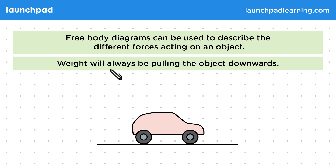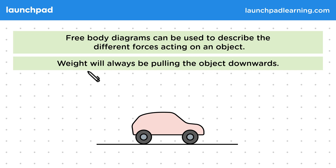Weight will always be pulling the object downwards, and weight is the force experienced by mass due to gravity. So weight and gravity pull the object towards the Earth. So on the free body diagram, the direction of weight is downwards.